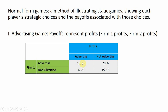If both firms advertise, we get 10, 10. If both firms do not advertise, their profits will actually be higher — firm one gets $15 and firm two also gets $15. The implied assumption is that advertising doesn't create new demand; advertising just steals customers from the other firm. So if both firms advertise, one ad cancels out the other and they're no better off. If both firms don't advertise, neither has an advantage but they save money, so profits are higher. If firm one doesn't advertise and firm two does, firm one is at a strategic disadvantage with profits of only six, while firm two steals all of firm one's customers and gets $20 of profits — and vice versa in the other row.